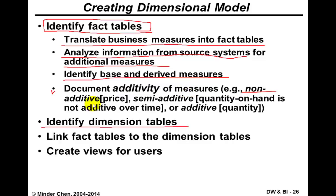A measure can be non-additive, like unit price — we don't add prices up. Semi-additive means a measure like quantity on hand may be additive for certain dimensions but not all. For instance, you can add quantity on hand across multiple products, but adding quantity on hand over the date dimension may not make sense. Fully additive measures, such as quantity sold in the facts table, are very powerful. Once we identify those, we link the facts table to the dimension tables through foreign key–primary key pairs, and eventually we can manipulate this dimensional model to create various views for our users.